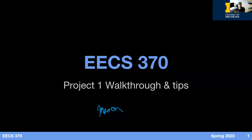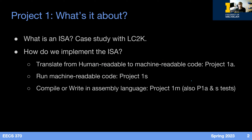Welcome to the first project walkthrough for EECS 370. In this video, we will go over the spec examples. We won't read through the full spec, but hopefully this should illuminate some of the finer details of the spec that are easy to miss. Our first project is all about the basics of an ISA, which will form the basis of what we'll look at for the rest of the semester. We will be implementing three main parts of an ISA by looking at LC2K.